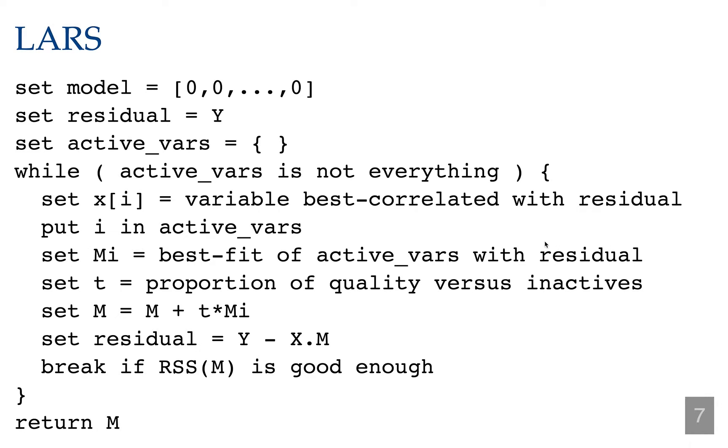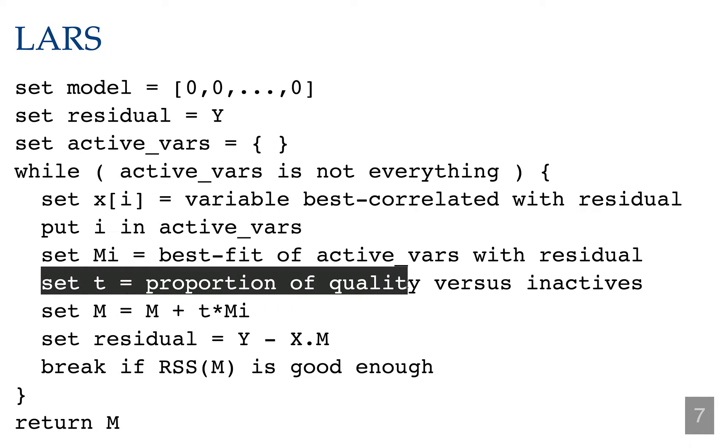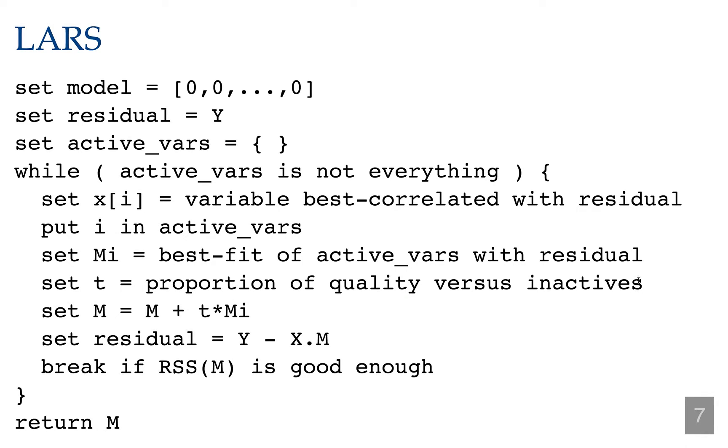Again, not with the actual response variable y, but with the residual after you've incremented your model a certain amount. And as we discussed, we don't want to simply add mi to the existing model m. What we want to do is only add a portion of it, and we'll call that portion t. I believe the book calls it alpha, which is the proportion of quality versus the inactive variables that remain. In other words, we want to know how much of mi this new model should we add to the existing model. How much should we adjust our model until some other inactive variable is just as important as the variable xi. Once we find that number, and I'll describe how to find that in just one moment, we're going to update our model m by taking the previous model and adding this scaled version to it.